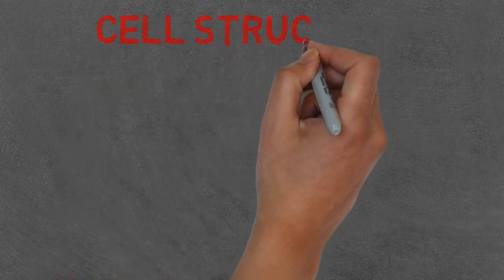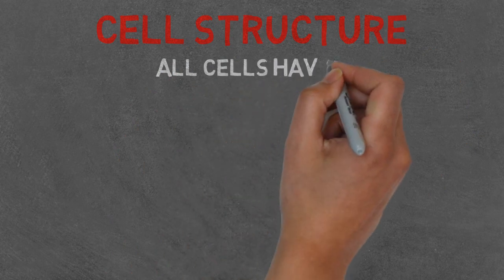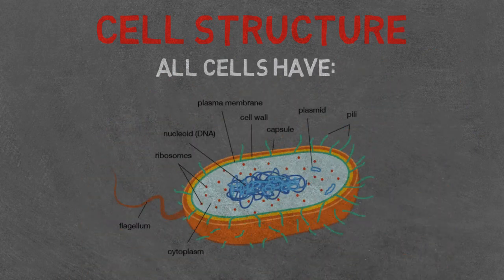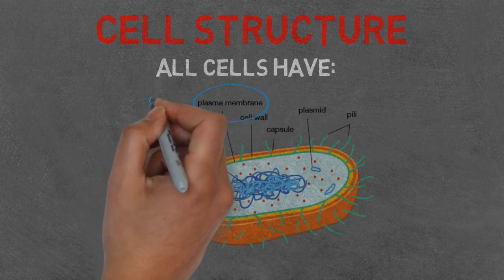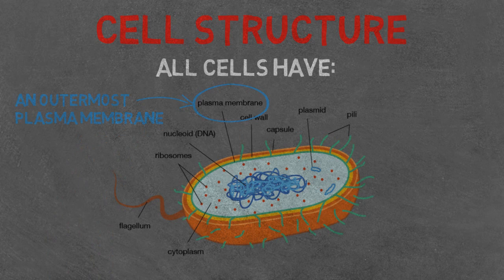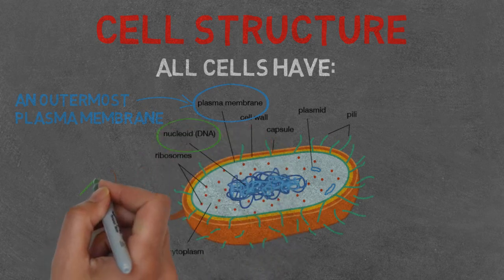So if we look at the cell's structure, all cells have an outermost plasma membrane. This is a phospholipid bilayer with embedded proteins, and its function is to control what goes in and out of the cell by receiving signals. Genetic material in the form of DNA.